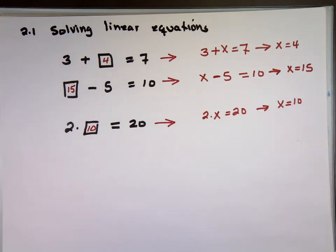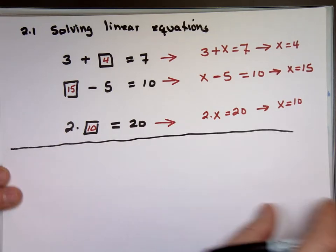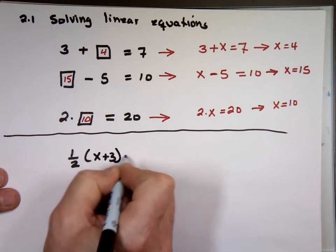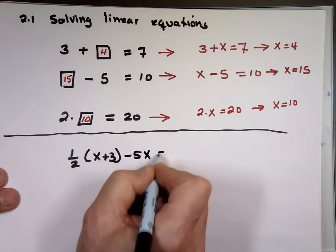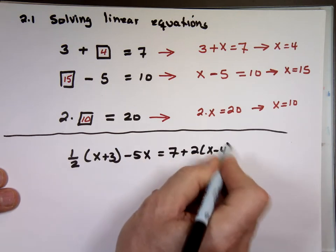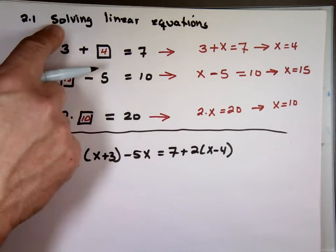When you look at these problems, I don't need any rules to solve them — I can look at them and tell you the answer. But what happens when you start getting ugly problems like: 1/2 times x plus 3 minus 5x equals 7 plus 2 times x minus 4? There's no way you can look at that and say the answer is 3. So we need guidelines. How do we solve these linear equations? What is the process? That's really what today's topic is — how do we solve linear equations?